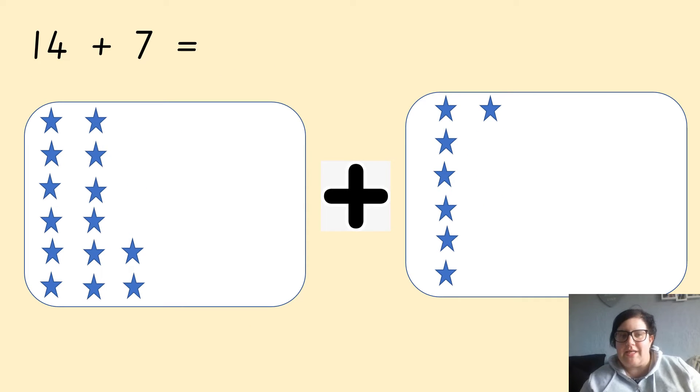Okay, looking at the next one, we've got 14 stars here. You can count them to check if you like. I counted them earlier, there are definitely 14 and now we are going to add 7 more. So putting 14 in your head or counting on from 14. So 14, 15, 16, 17, 18, 19, 20, 21. Your answer would be 21.